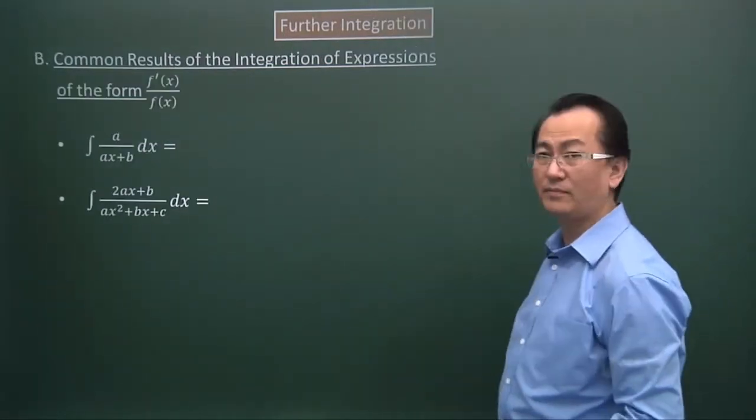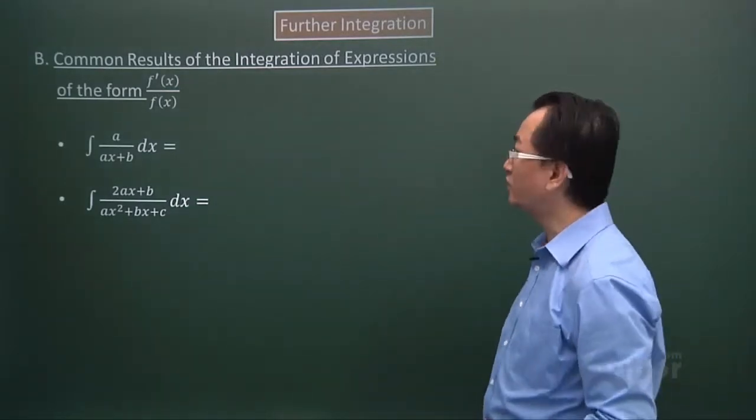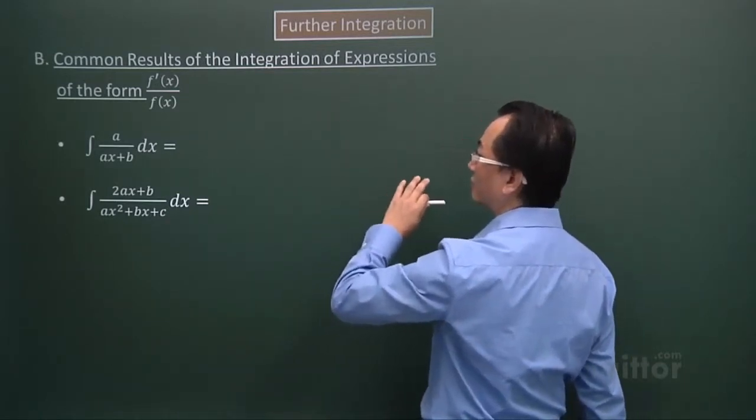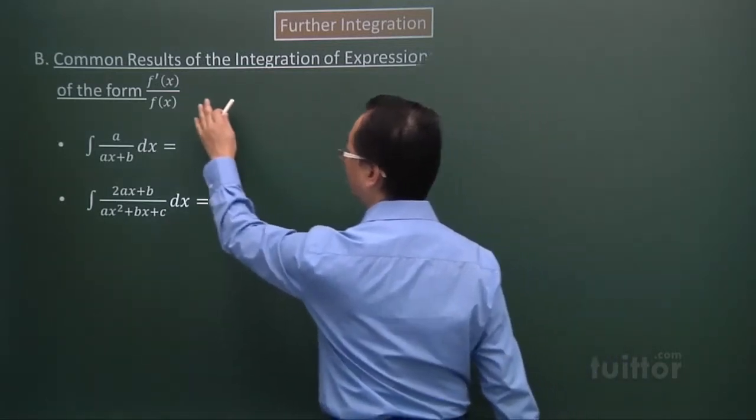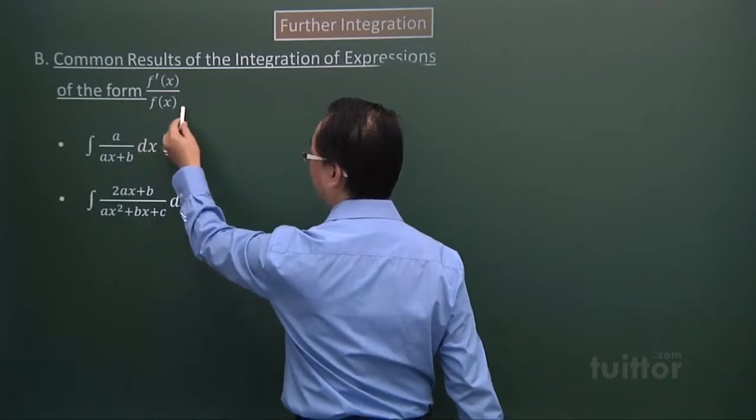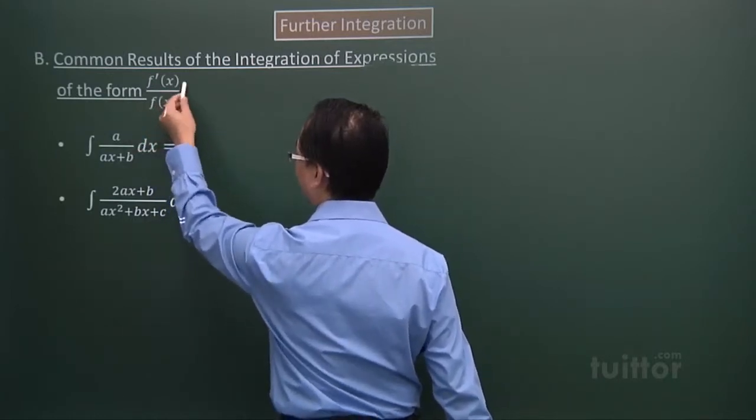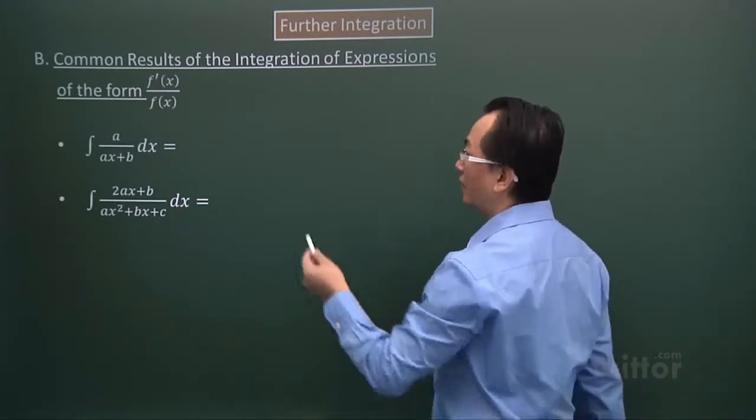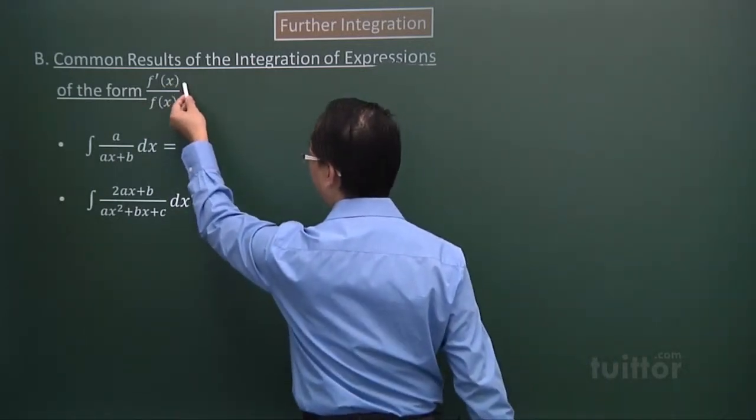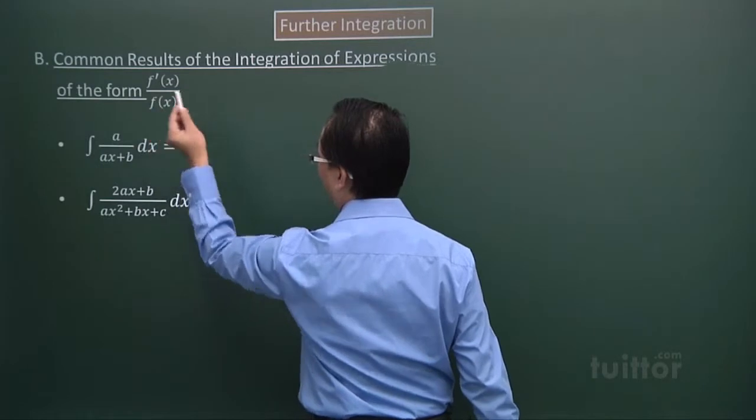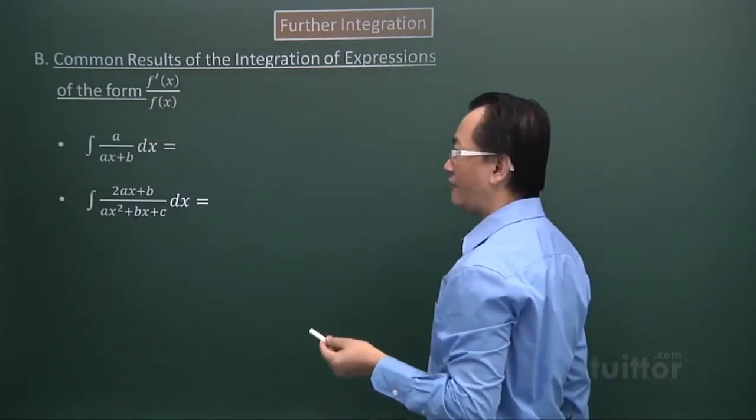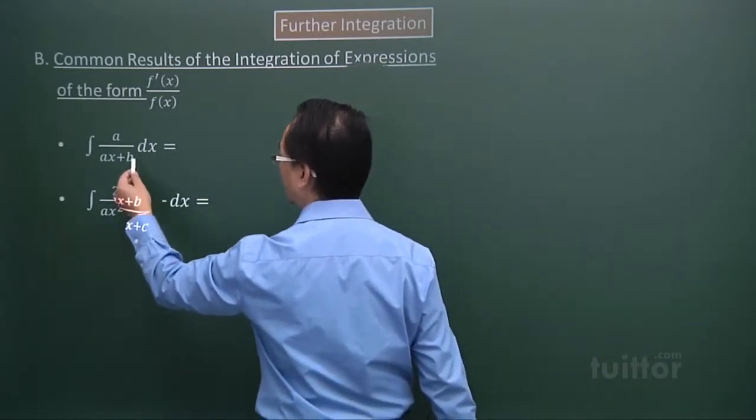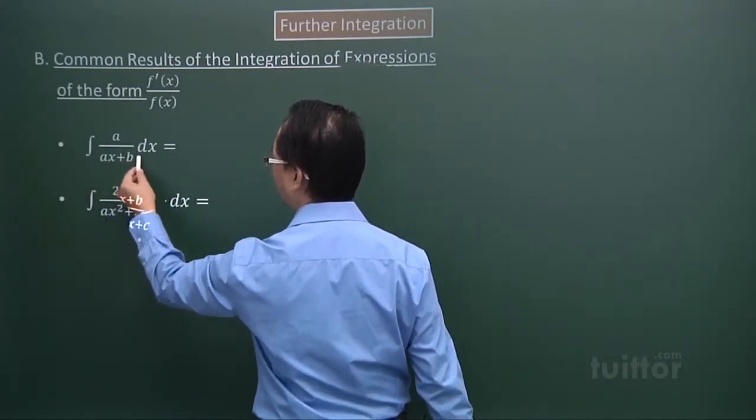For part B, because we're looking at the integration of the logarithmic expression of this form, you can see f(x) and here you have f'(x). Now, f'(x) is actually the first derivative of f(x). So we are looking at this expression, ax + b.